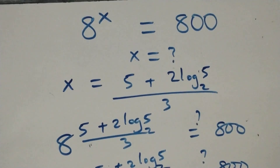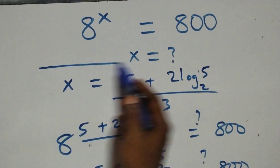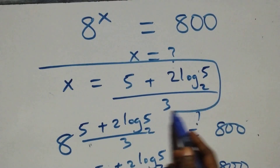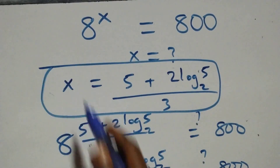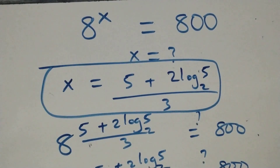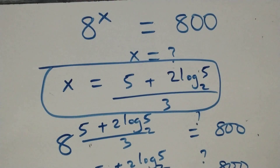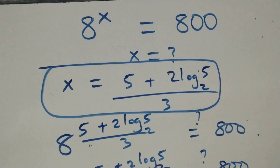We conclude that x equals (5 + 2 log₂5) over 3 satisfies the given equation. Thank you for watching — don't forget to subscribe for more videos, turn on the notification bell, share the video, give a thumbs up, and leave your comments. See you next time, bye for now.